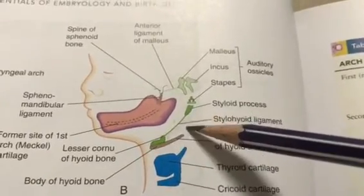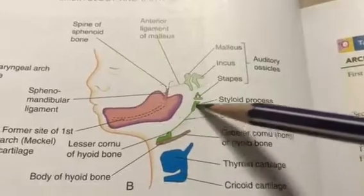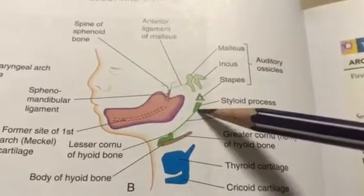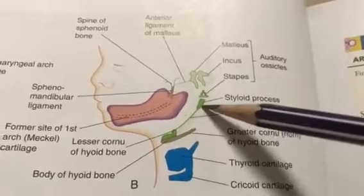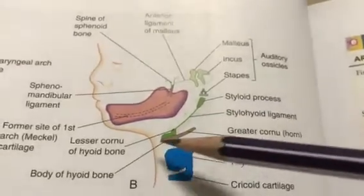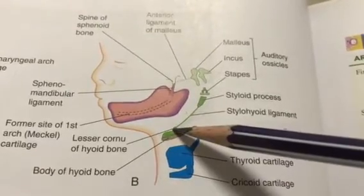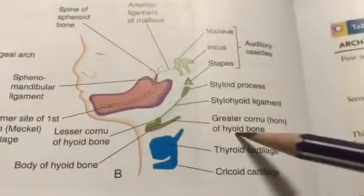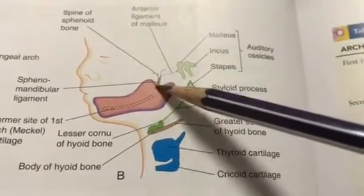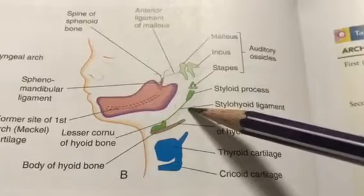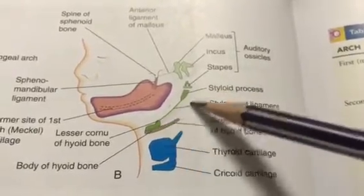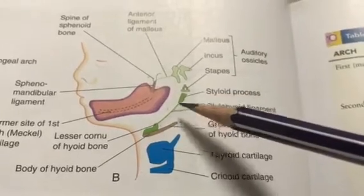Moving to the second arch — similarly the entire thing is cartilage. The cartilage will be transformed into the stapes and styloid process. The middle portion will degenerate and be transformed into the stylohyoid ligament. The distal ventral portion will be transformed into the lesser cornu of the hyoid bone. The second arch is also called the hyoid arch since the hyoid bone is derived here.